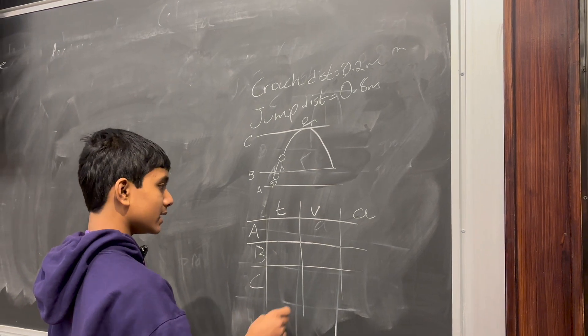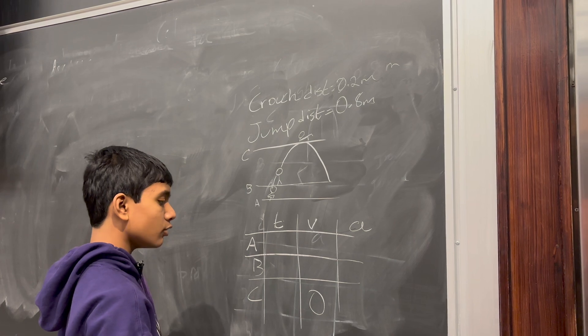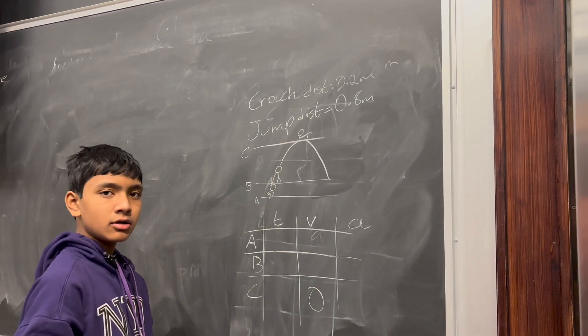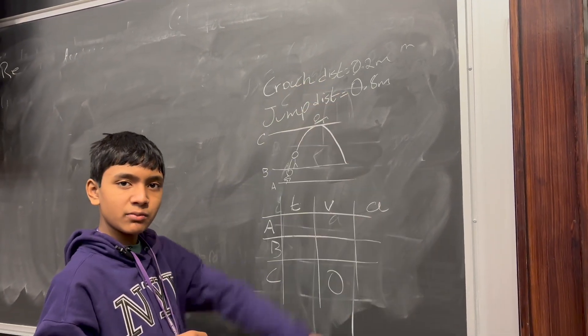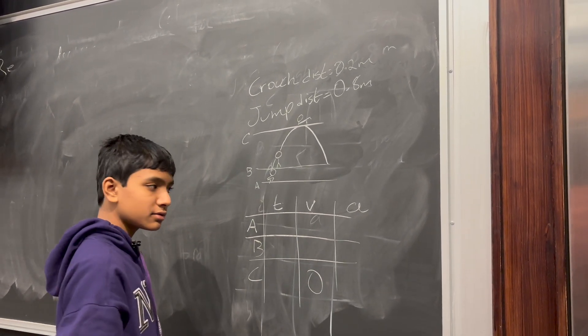Of course, at location C, we can already figure out that this is going to be 0 because it's at maximum height, which means it can't go upwards anymore. So, that means that the vertical velocity over here is 0.